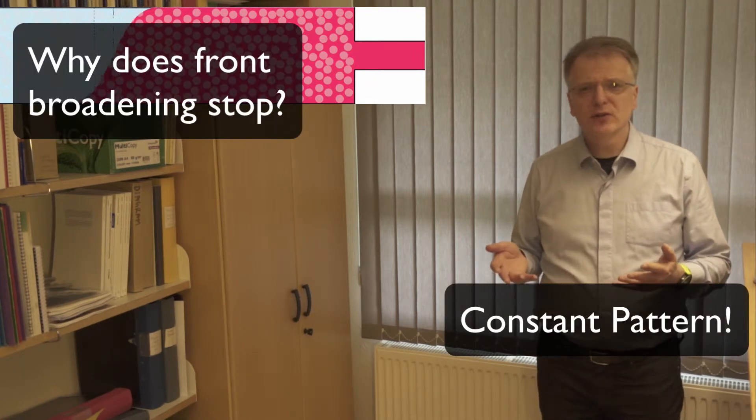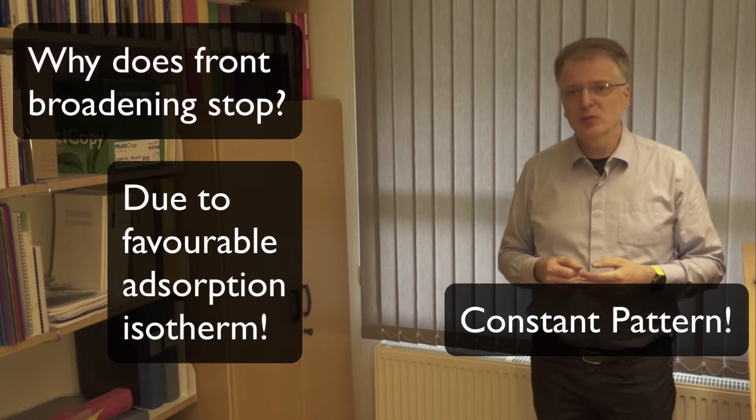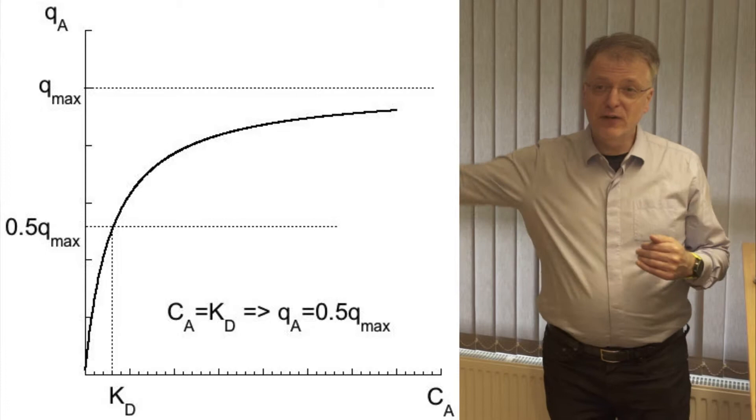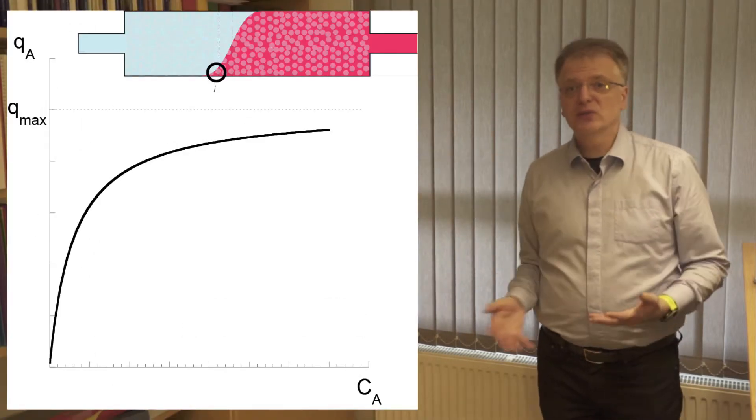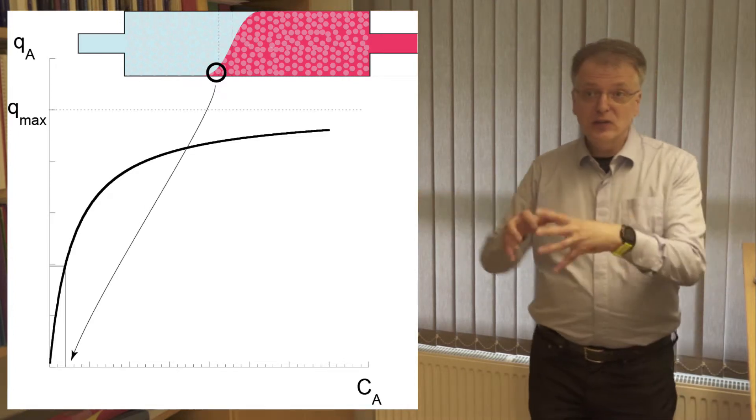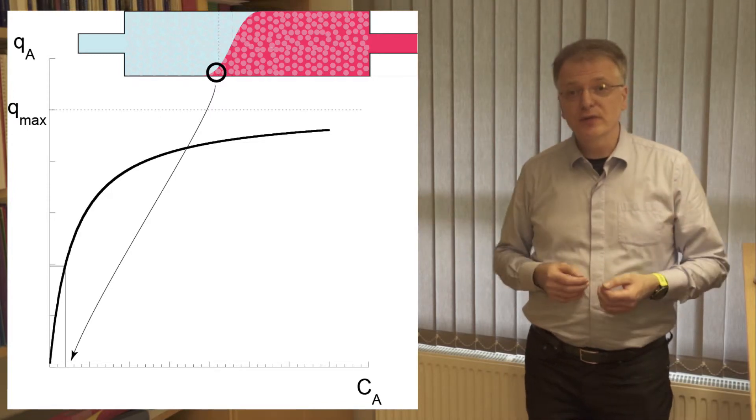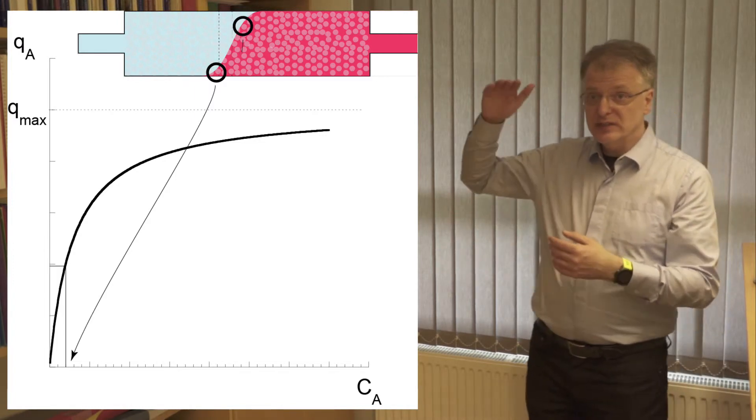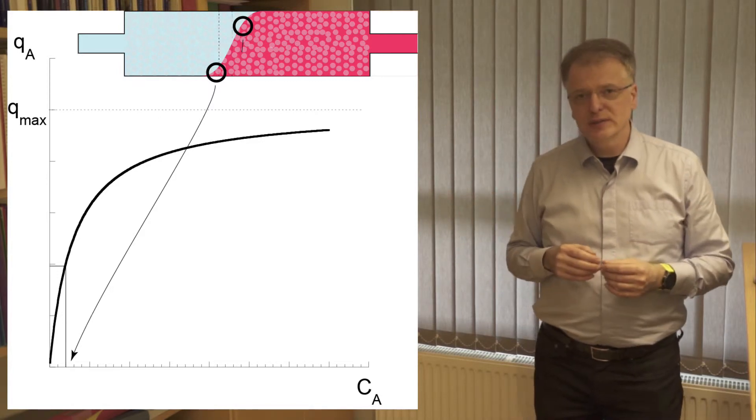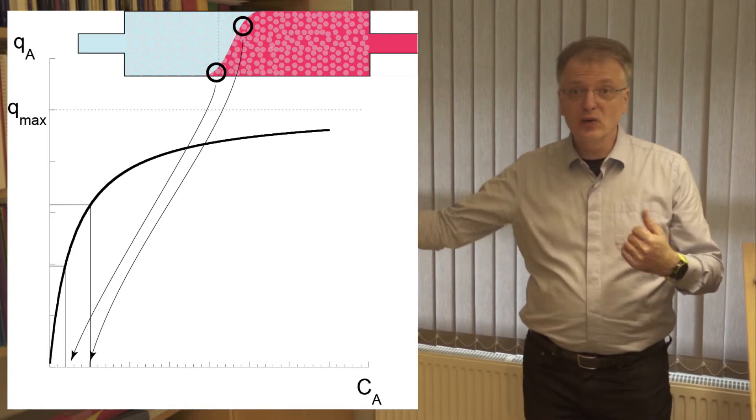But why doesn't the front continue to broaden and become more and more diffuse? The answer is due to favorable adsorption isotherm. So the molecules of the red substance that have traveled the farthest into the column are surrounded by adsorbent that has nothing or close to nothing adsorbed to its surface. So these molecules thus tend to adsorb. Once adsorbed they can't follow the convective flow through the column and thus stop moving. Further back in the front the concentration is higher and the red substance is surrounded by adsorbent that already has molecules adsorbed to it. Thus in this part of the front it doesn't slow down as much through adsorption as the low concentration part of the front.